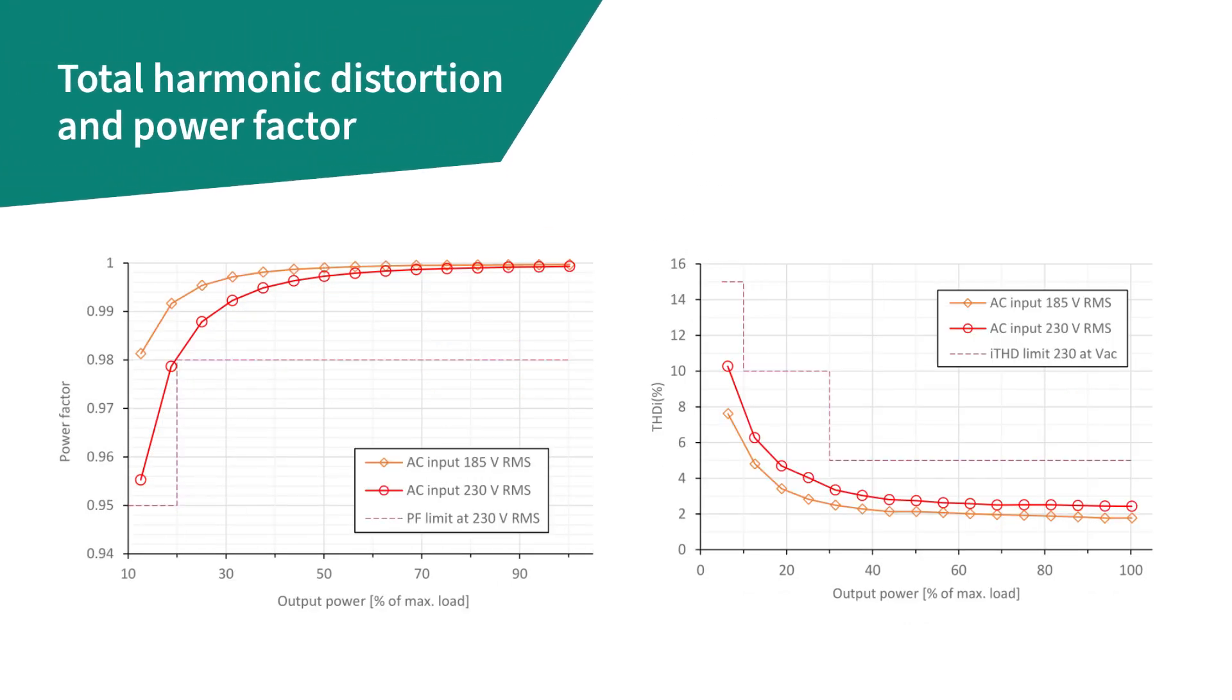The images show power factor on the left and total input current harmonic distortion on the right, measured at 230 volts AC and 185 volts AC line voltage. The power factor and the total harmonic distortion of the OCP standard are also reported in the plot for reference.